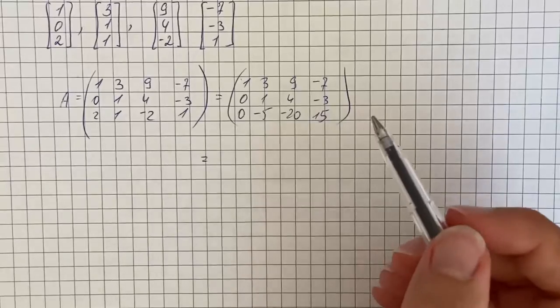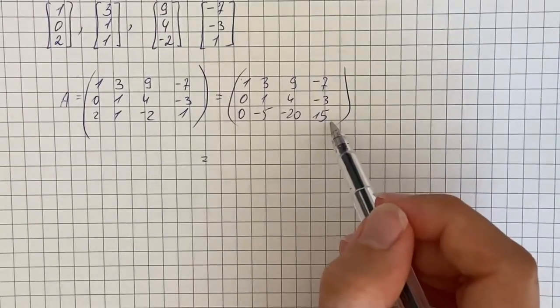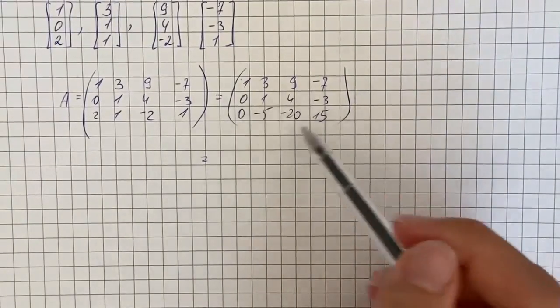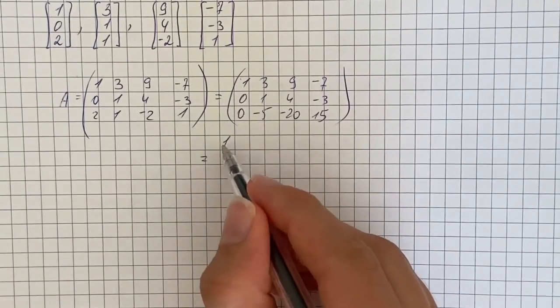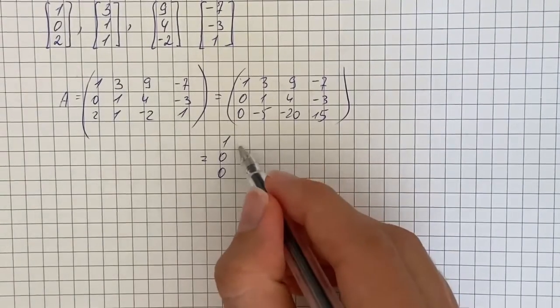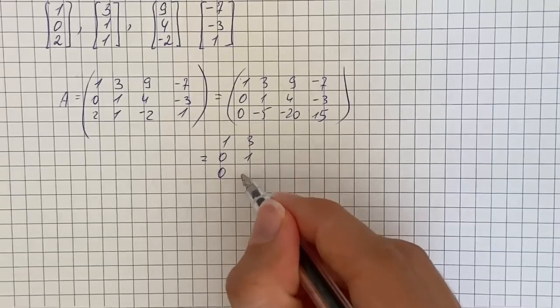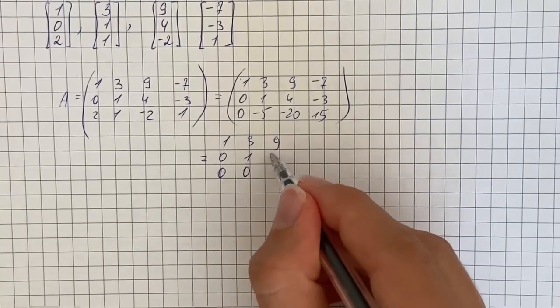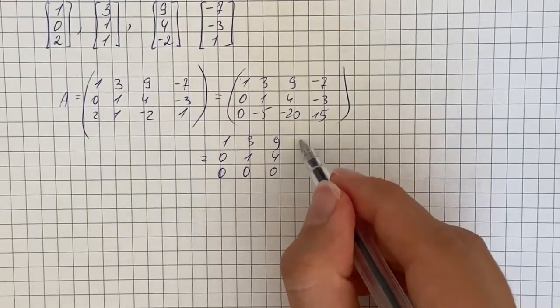Then we're going to divide the third row by 5 and add the second row to the third. So we'll get 0, 3, 1, 0, 9, 4, 0, negative 10.